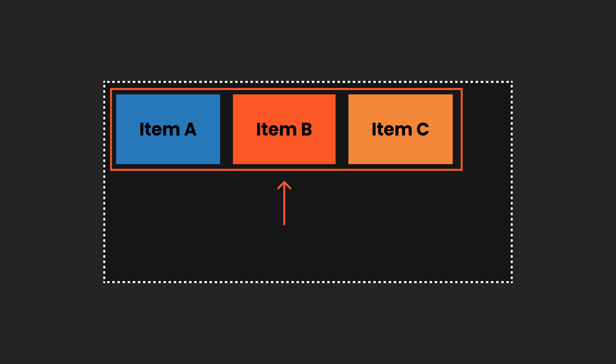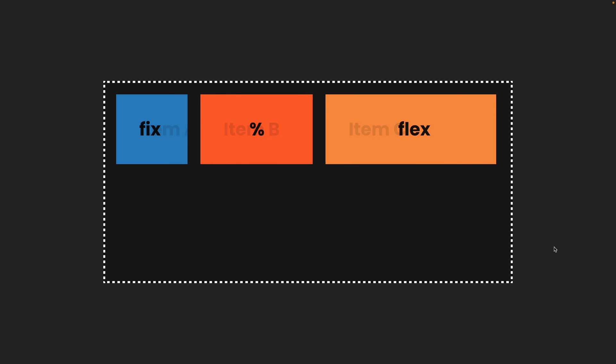Think of the container properties like the family rules our lovely parent, the Flexbox container, sets equal for all its children. But the children — the Flex items — are lively kids that want a bit of freedom within the constraints the parents set. And the Flex item properties give them the freedom to define how each item will adapt to the available space. We could set a fixed size, a percentage size of the available space in the container, or we can use something called Flex.